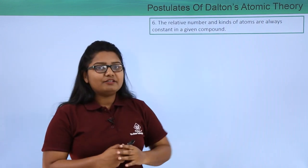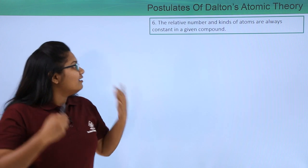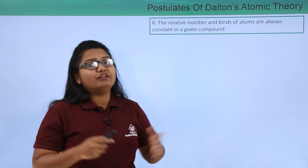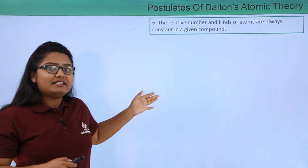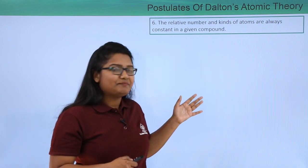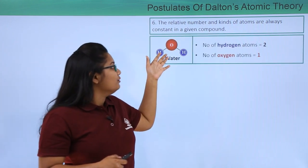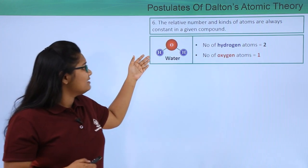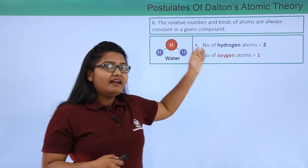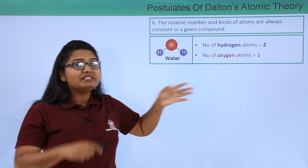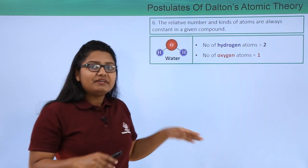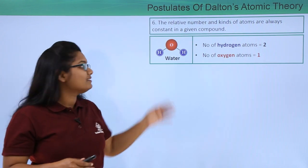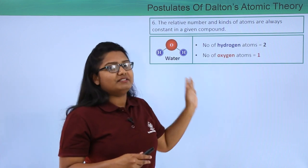The sixth postulate of Dalton's atomic theory says that the relative number and kinds of atoms are always constant in a given compound. For a water molecule, which has two hydrogen atoms and one oxygen atom, the number is always constant — we cannot have a water molecule with three hydrogen atoms or two oxygen atoms. It is always two hydrogen atoms and one oxygen atom.